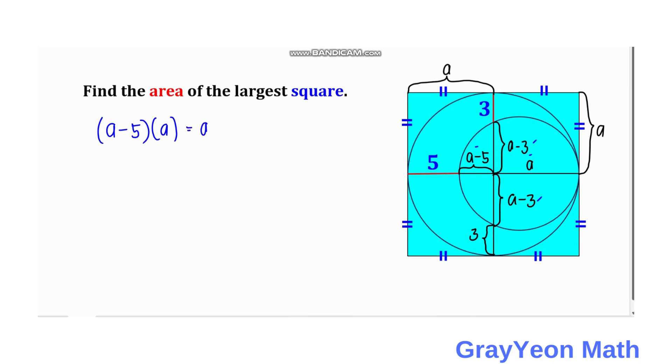Equal to a minus 3 times a minus 3. And therefore we have a squared minus 5a is equal to a squared minus 6a plus 9. Okay, so we just need to...